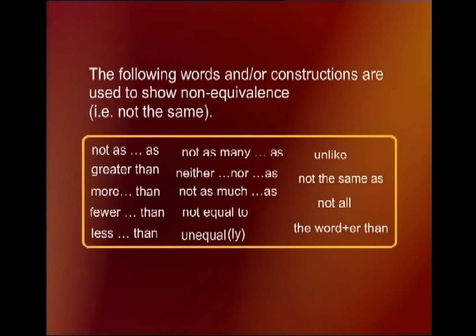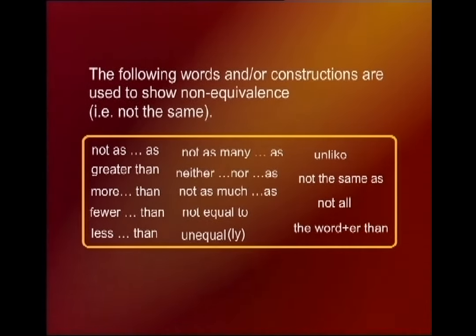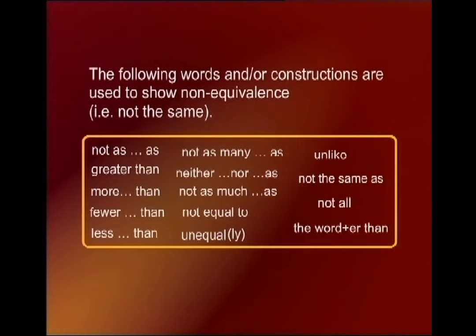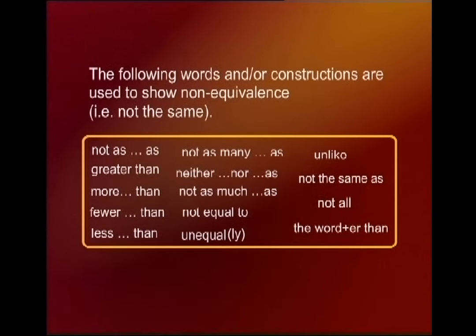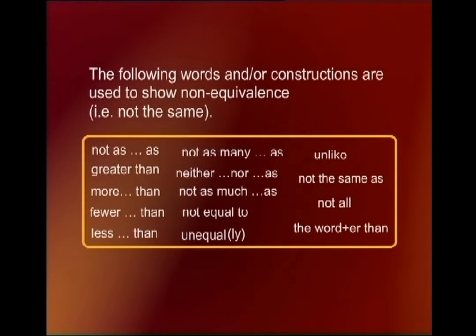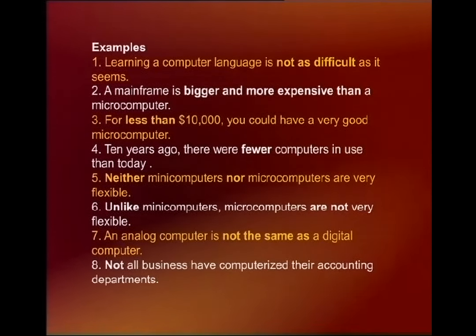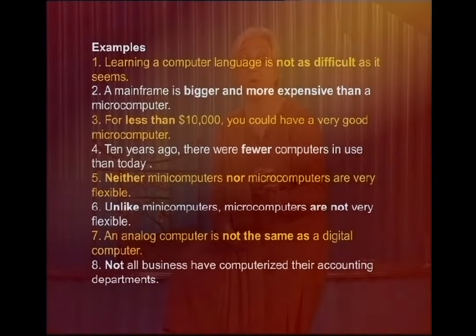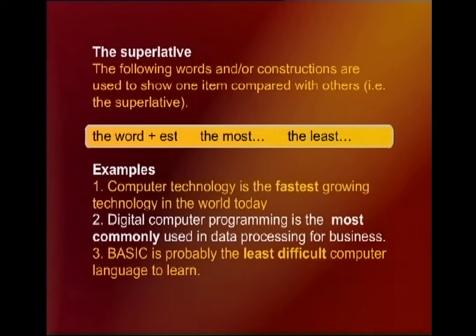Examples of non-equivalence include phrases such as: 'not as difficult as,' 'is bigger and more expensive than,' 'less than,' 'fewer,' 'neither,' 'unlike,' 'not the same,' 'not.' We also have constructions to show one item compared with others — we use the superlative with 'the most' or 'the least.' Examples: 'fastest,' 'most commonly,' 'least difficult.' For parallel increase, the words are 'the more' and 'the less' — for example: 'the bigger, the more complex'; 'the smaller, the less challenging.'